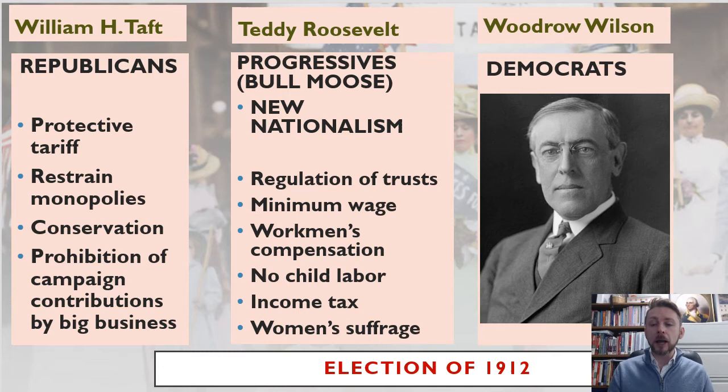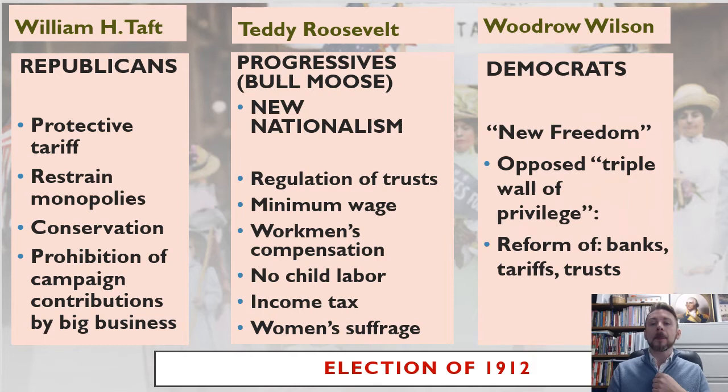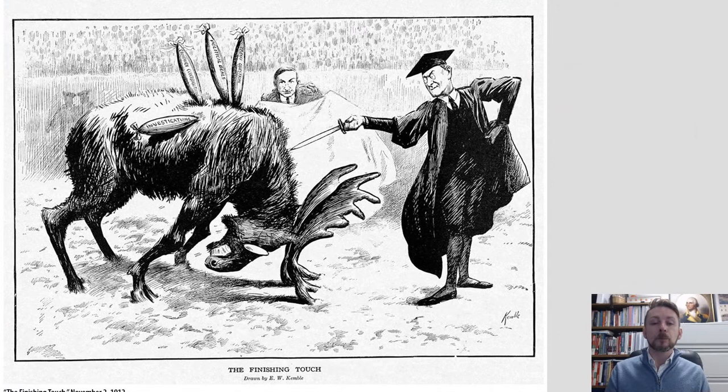Teddy Roosevelt's New Nationalism called for regulation of trusts his way, not the Taft way, plus minimum wage, workman's compensation, no child labor, income tax, and women's suffrage — a much more specific and progressive platform. Woodrow Wilson's New Freedom vaguely attacked the 'triple wall of privilege,' calling for reform of banks, tariffs, and trusts. And as we know, Wilson wins it.